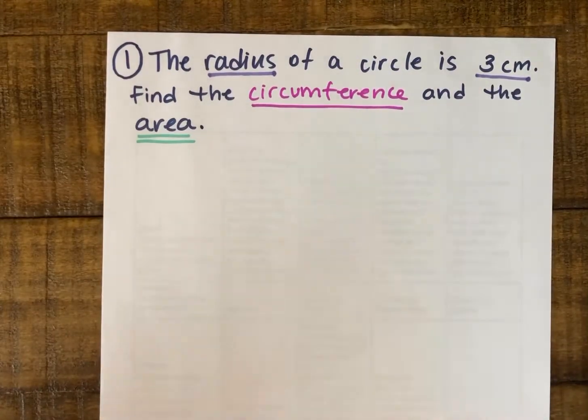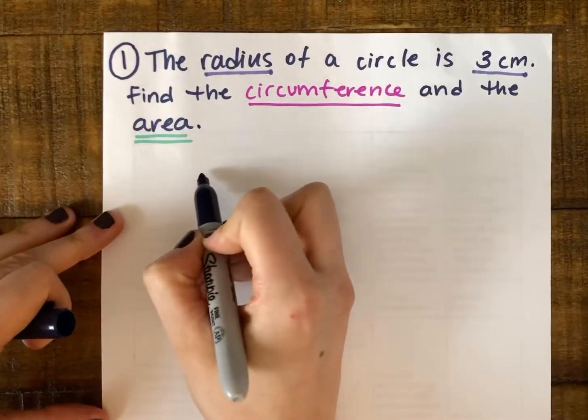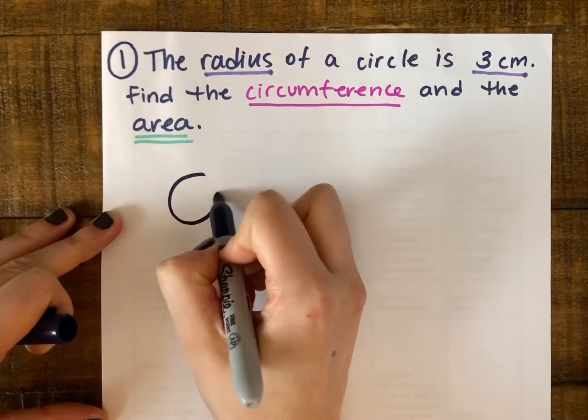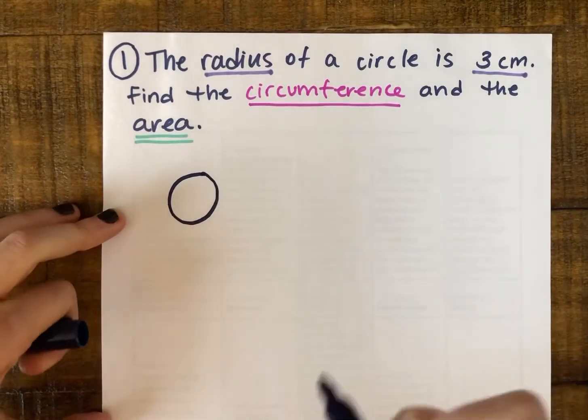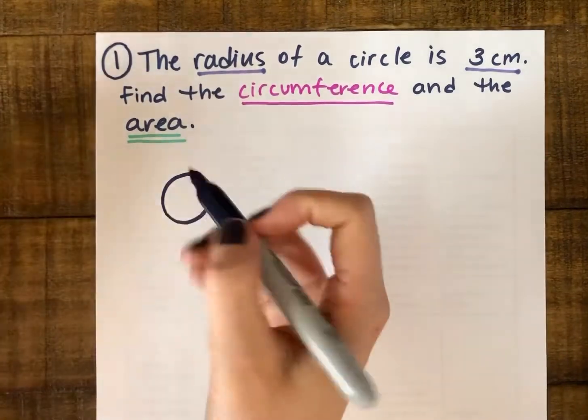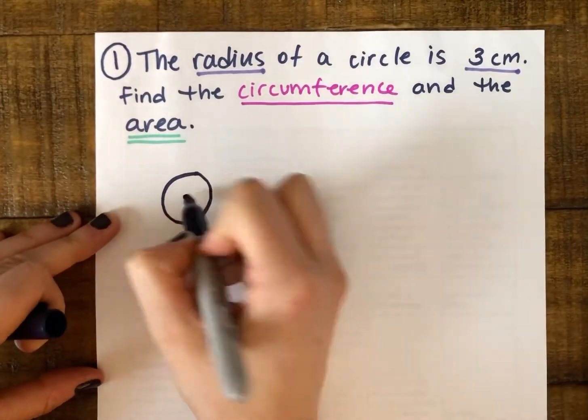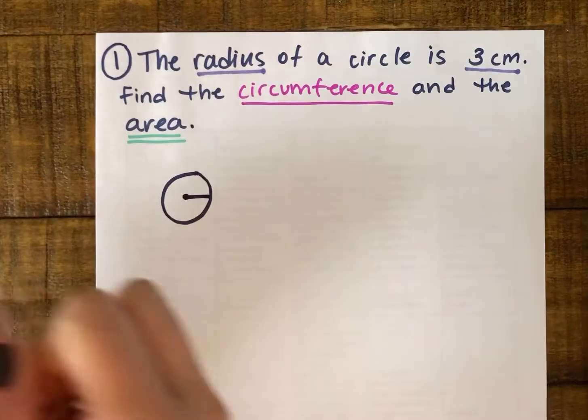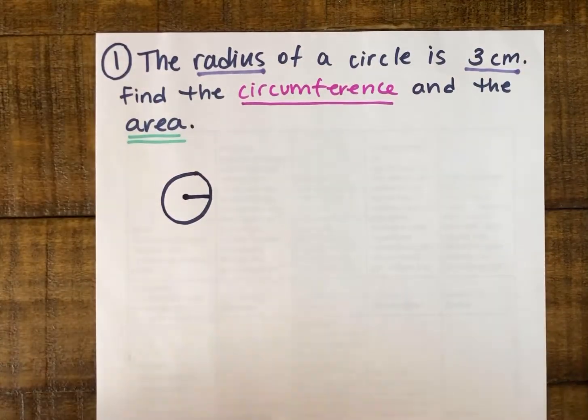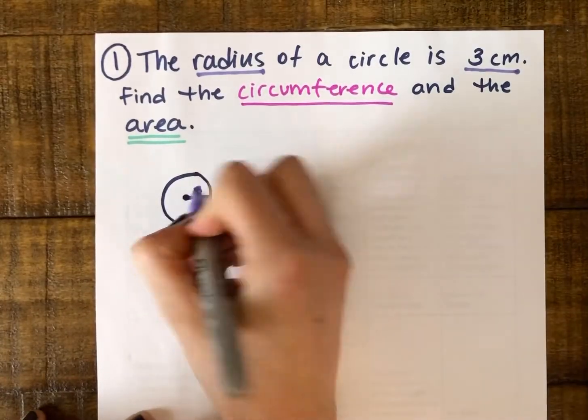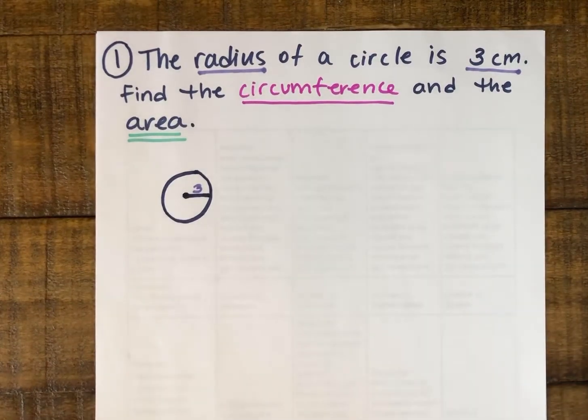I'm going to start by drawing myself a circle just so I can picture it. I'm going to draw that the radius is 3, and that radius we know is the distance from the center to the edge. So they're saying in this circle, not drawn to scale, that is 3 centimeters.